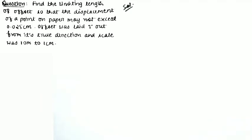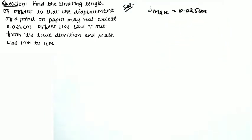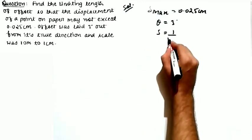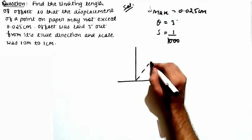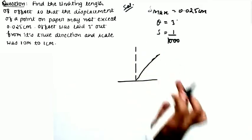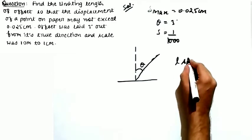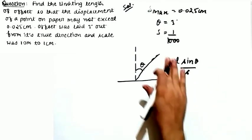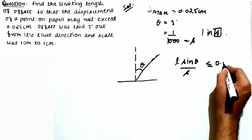The next question asks to calculate the limiting length of offset so that displacement of a point on paper does not exceed Δmax = 0.025 cm. The offset was laid at an angle of 3° out from its true direction, and the scale is 1:2000 (1 cm = 10 m). The formula is: L · sin θ / S ≤ 0.025 cm.